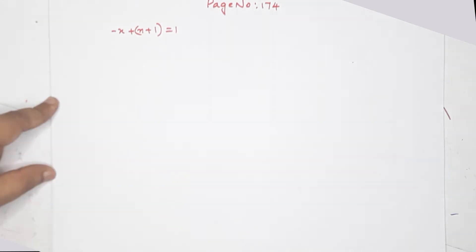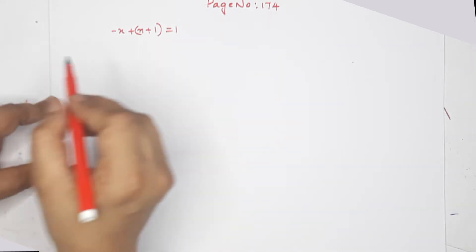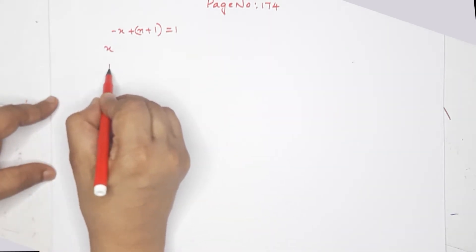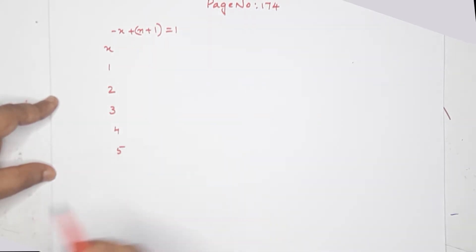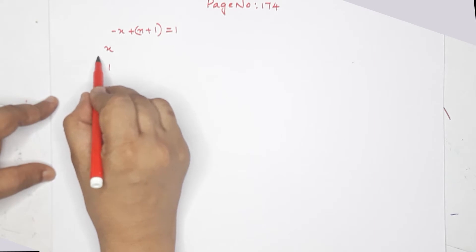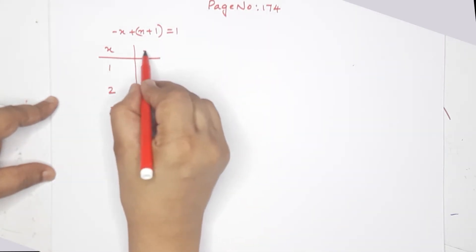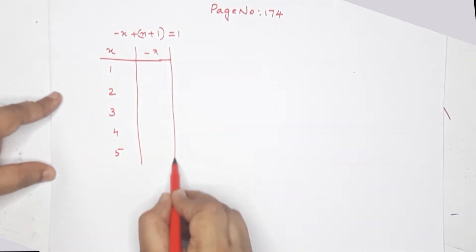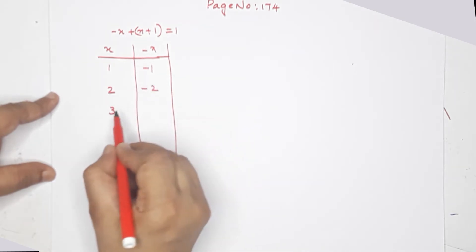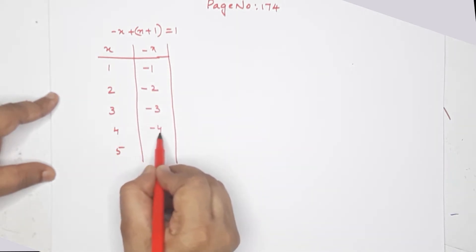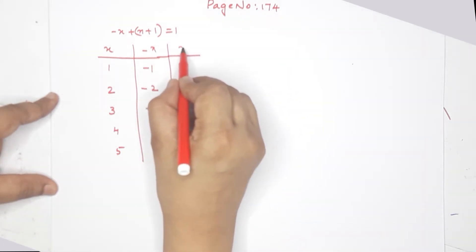If you are acting like a number, you are doing these values. We act like x: 1, 2, 3, 4, 5. x is equal to x. If x is positive, then negative x means minus 1, minus 2, minus 3, minus 4, minus 5. Now here is x plus 1.